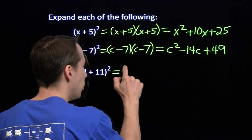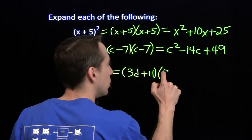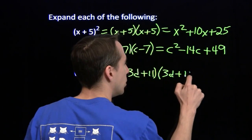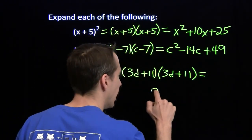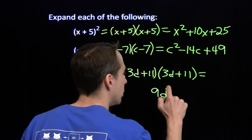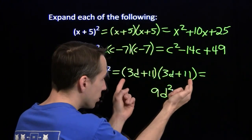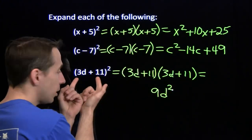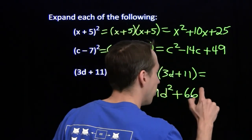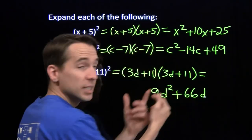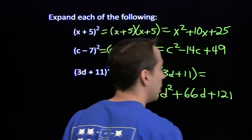Last one. We'll write that out as the product of two binomials. 3d times 3d gives us 9d squared. Then we have two copies of 11 times 3d — there's one there, there's one there — two copies of 11 times 3d gives us 33d plus 33d, or 66d. And then finally, 11 times 11 is 121.